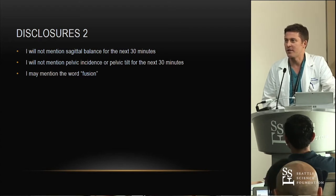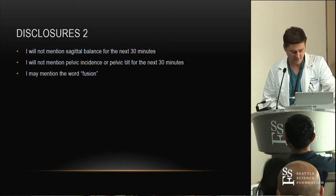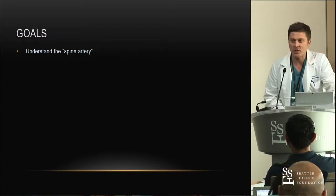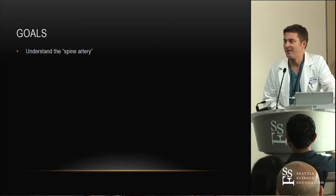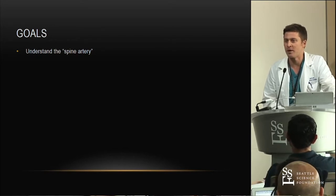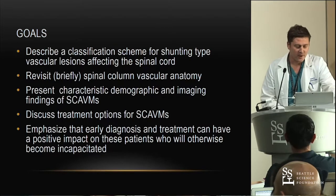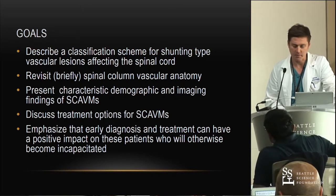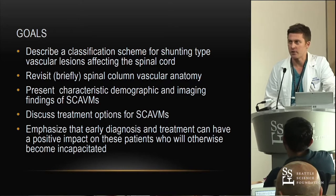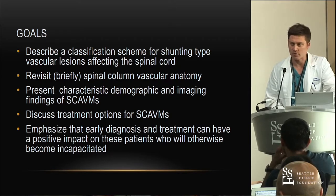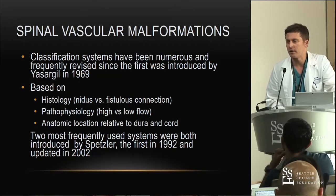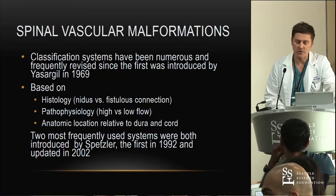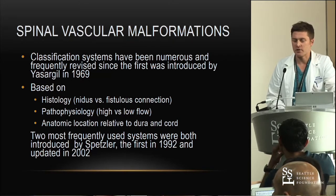But I may mention the word fusion, usually in the setting of 'they shouldn't have done that fusion.' Chris Schaffrey used to talk about 'the neck muscle,' meaning that the residents didn't really understand there was more than one muscle. Similarly, today we're going to talk about 'the spine artery' — there is more than one. We're going to describe a classification system of shunting-type vascular lesions, look at some spinal vascular anatomy, characteristic imaging findings, diagnosis and treatment. These are pretty rare things, but it's important to know they exist so you know where to look them up.